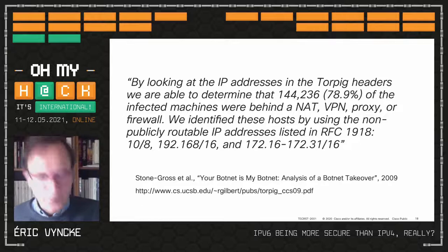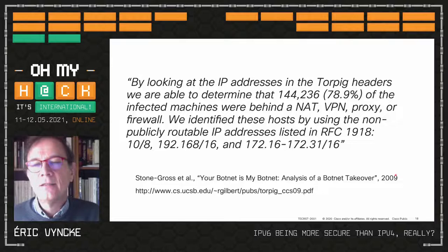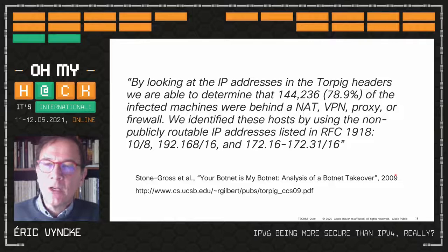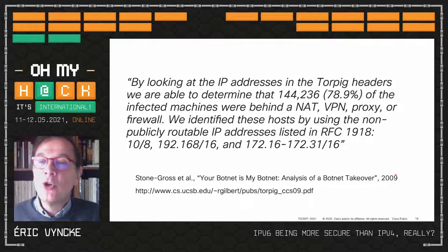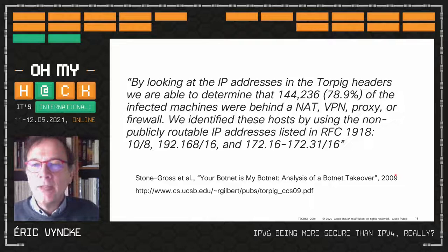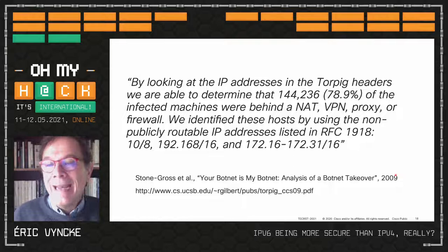Back in 2009, somebody cracked into the command-and-control channel of a botnet called Torpig and collected all local IPv4 addresses. About 80% were coming from networks 10.x, 172.x, 192.168.x — basically all NATted addresses. So 80% of botnet members were 'protected' by a NAT function — in short, they were not protected at all.